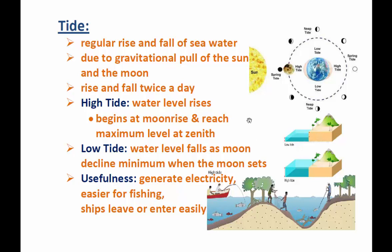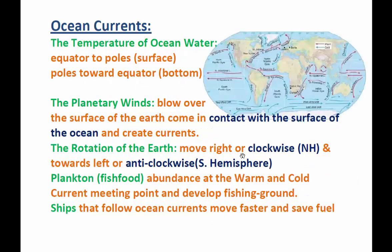Another type of movement of seawater is ocean currents, or simply currents. These are caused by three factors: first, the temperature of the ocean water; second, the planetary winds; and third, the rotation of the earth.